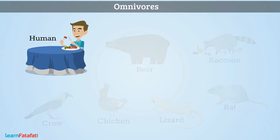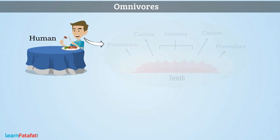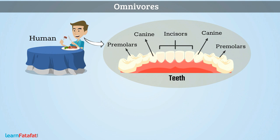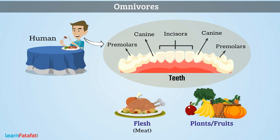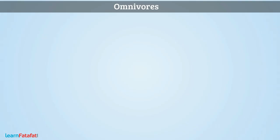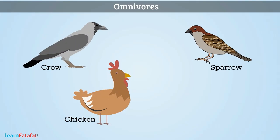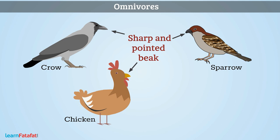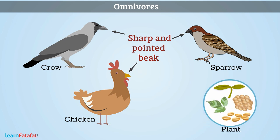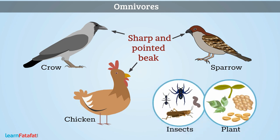They have different kinds of teeth which help them to eat plants as well as flesh. Omnivore birds have sharp and pointed beaks for eating both plants as well as small insects.